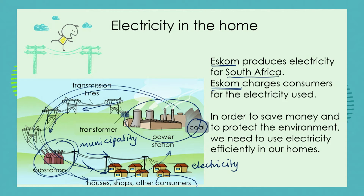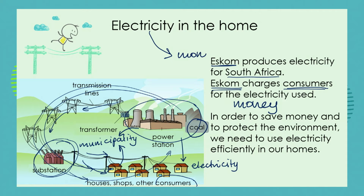So Eskom charges the consumers for the electricity used. In some places in the country Eskom charges the consumer directly. In other places Eskom will charge the municipality and then the municipality will charge the consumers. The bottom line is money, and we need to see that electricity costs money. And in South Africa, electricity is expensive.